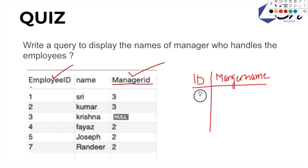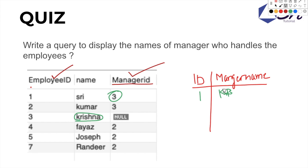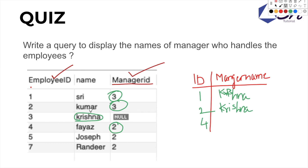So here, manager 3 is Krishna. Employee 2, Ravali, is handled by manager 3, Krishna. Employee 4 is handled by manager 2, Kumar. So the name here is Kumar.